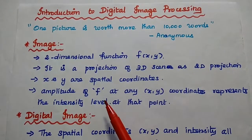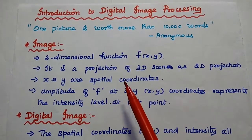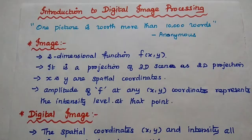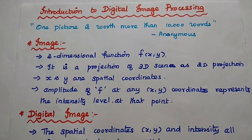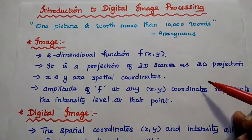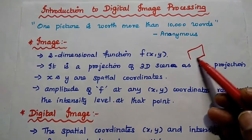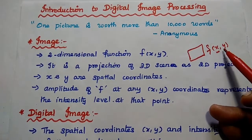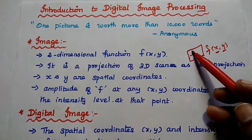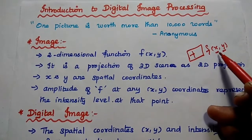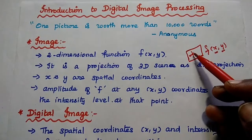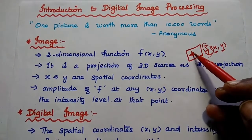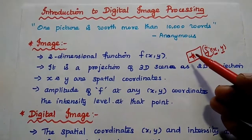So here, what does mean by image? Image is a two-dimensional function. As humans we are seeing a scene as a 3D projection, but that has to be considered as a 2D projection as the image. So image is a 2D function — it can be represented as f(x, y). This x and y represent the spatial coordinates of the image, and the amplitude of this function at any point represents the intensity level at that point.